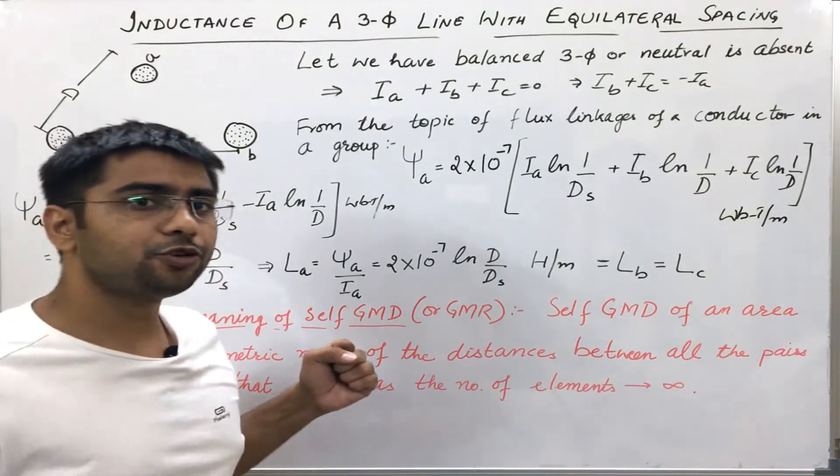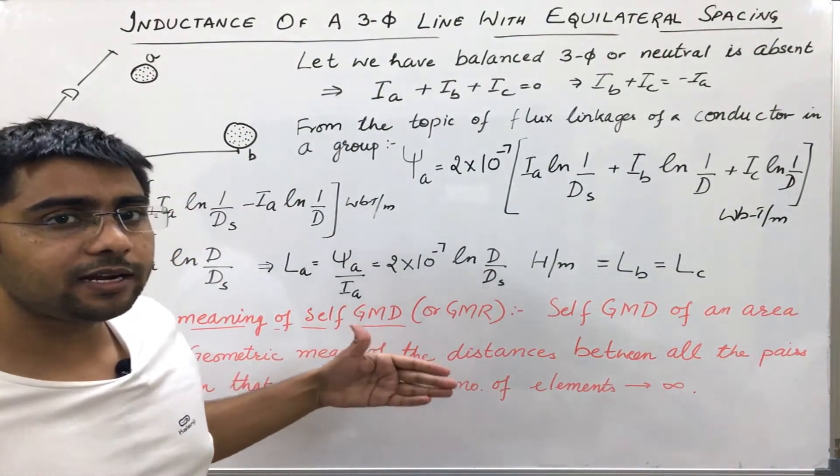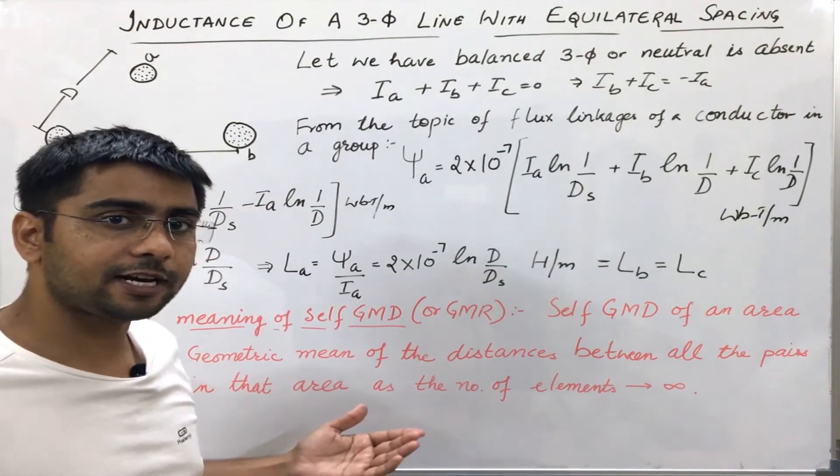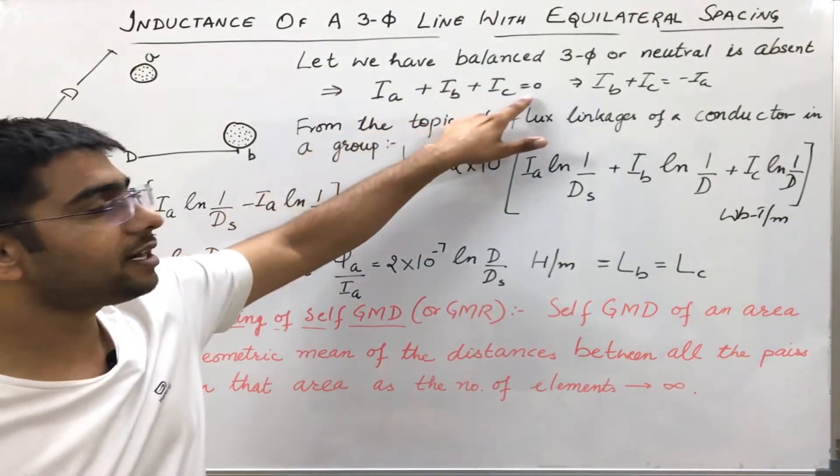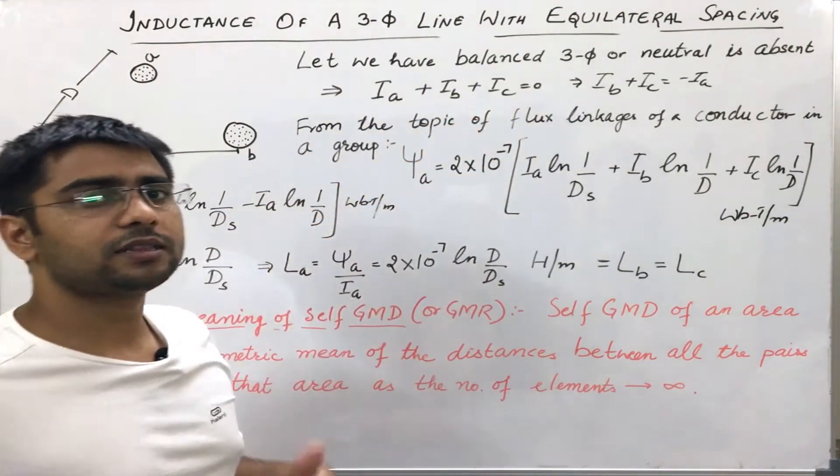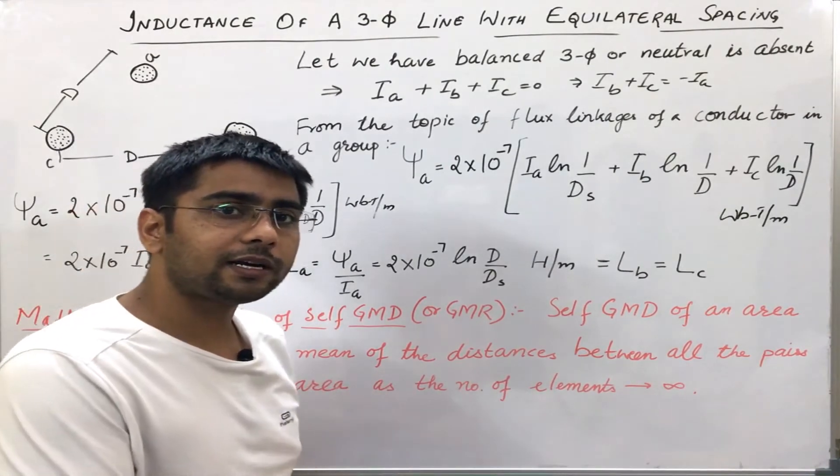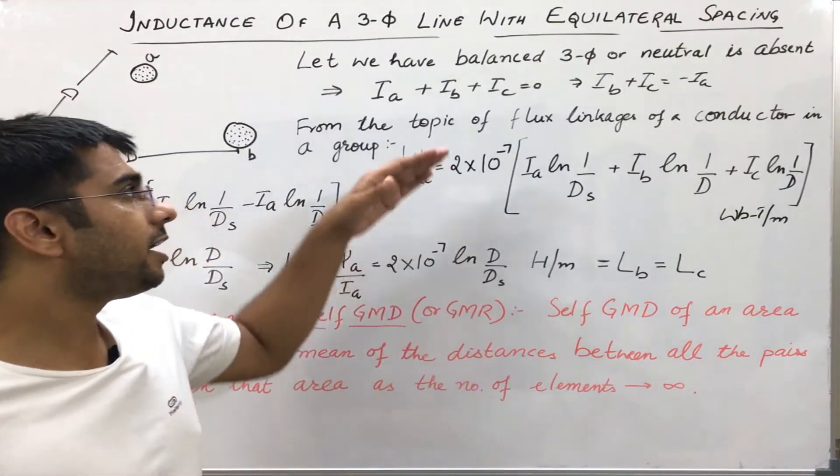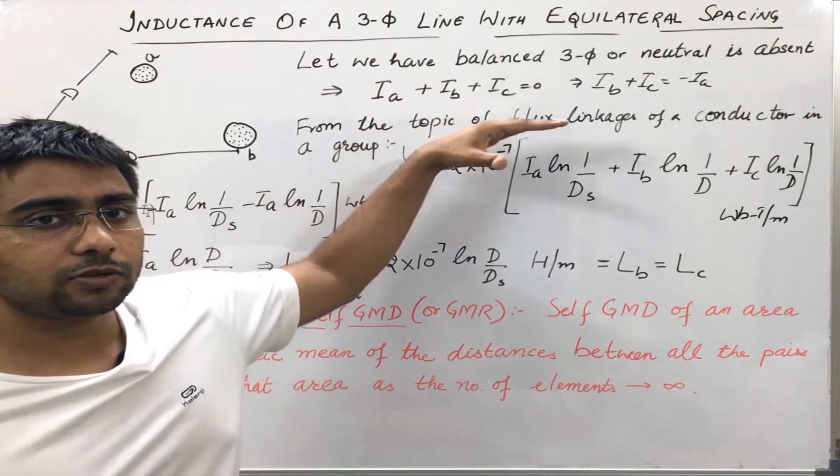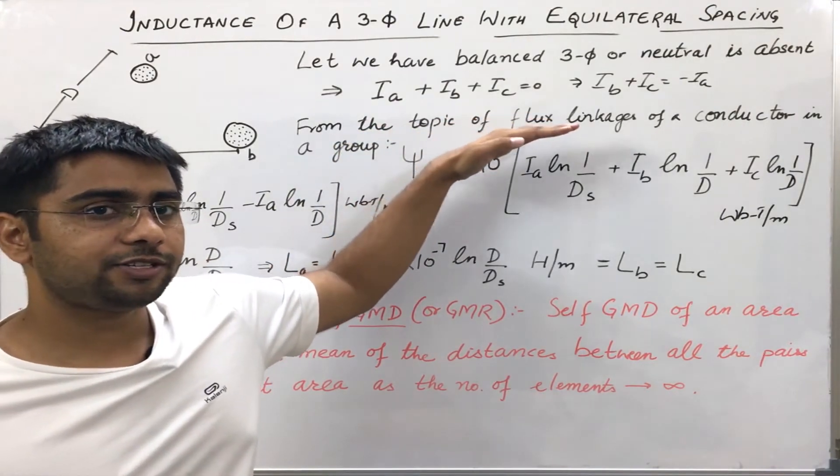Also, we are assuming that either the line is carrying balanced three phase currents so that the sum of the currents is zero, or the neutral is absent so that the neutral current cannot flow and therefore the sum of the currents in those three conductors will give a zero result.